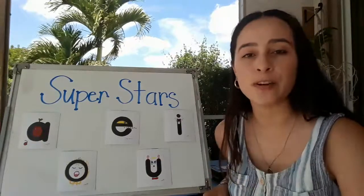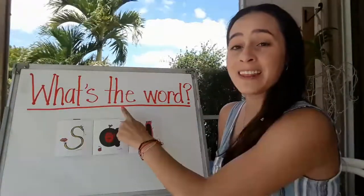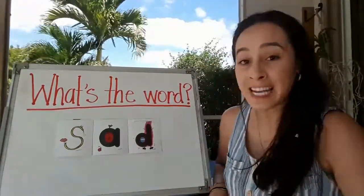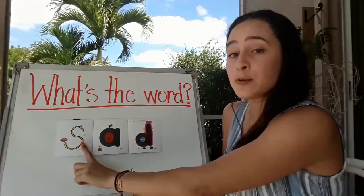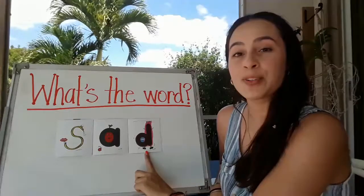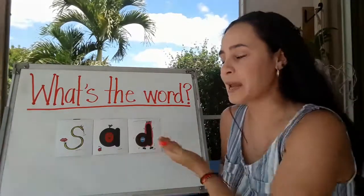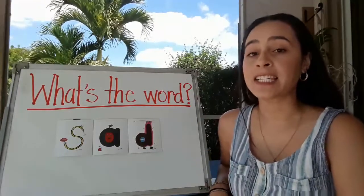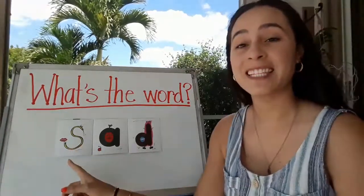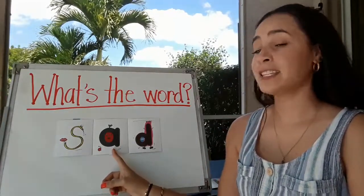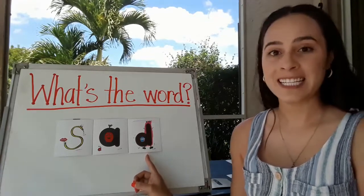Let's see when we're making words if you can find which one is the superstar. What's the word? We're going to figure out what this word says. Can you find the superstar? Remember: A, E, I, O, or U. Is this the superstar? Nope. Is this the superstar? Nope. This is the superstar. First, I'm going to ask you what the name of each letter is, then we're going to say the sound each letter makes. What is this letter? This is the letter S. What is this letter? This is the letter A. This is a tricky one — what is this letter? This is the letter D.